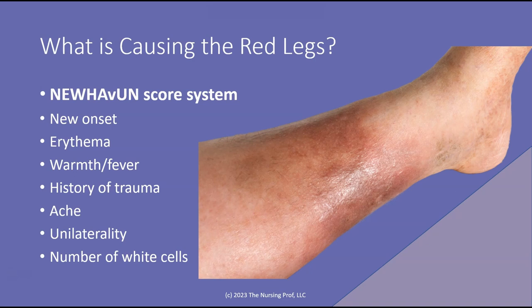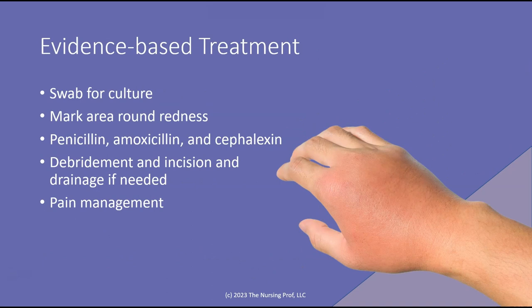We're also looking for aching and whether it's unilateral, because in many cases of vascular disease it's bilateral. Unilateral presentation tends to mean it's probably not vascular in nature. Finally, we look at the white blood cell count — we'll see an elevation in white blood cells as a result of this inflammation or infection.